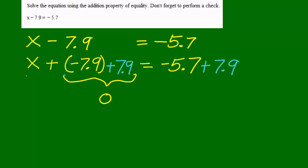When I add opposites I get 0, which gives me x plus 0 equals 2.2, which is negative 5.7 plus 7.9. x plus 0 is just x, so now I know that x equals 2.2.